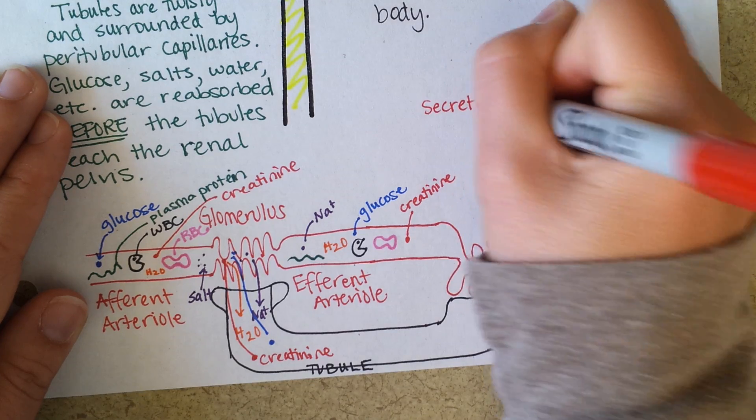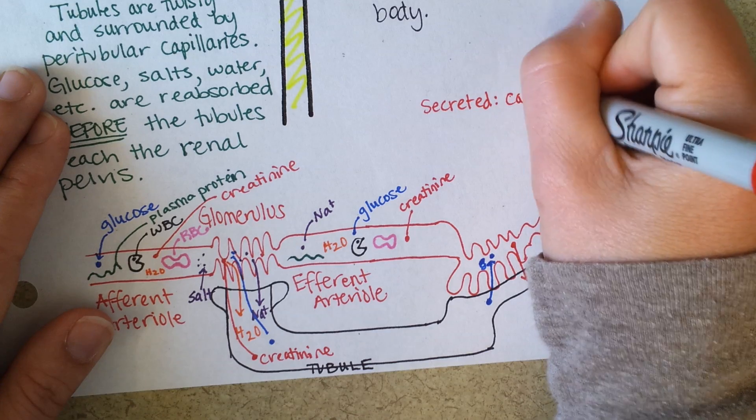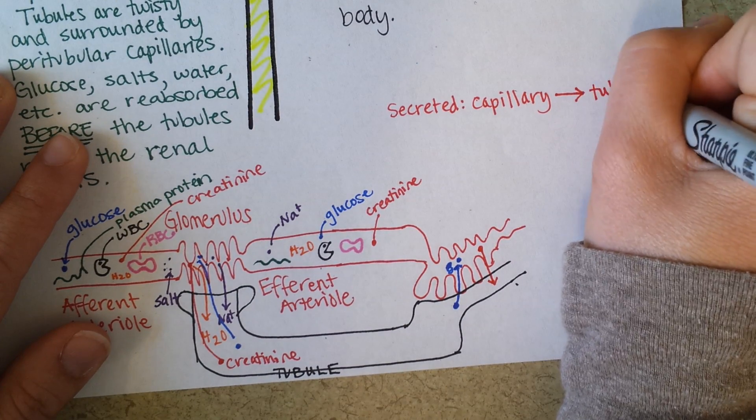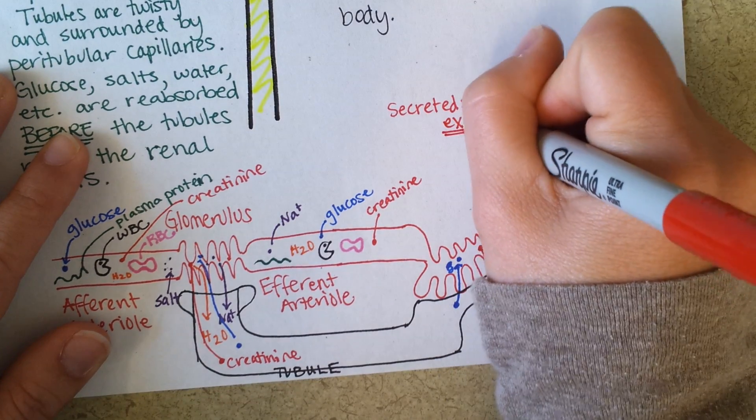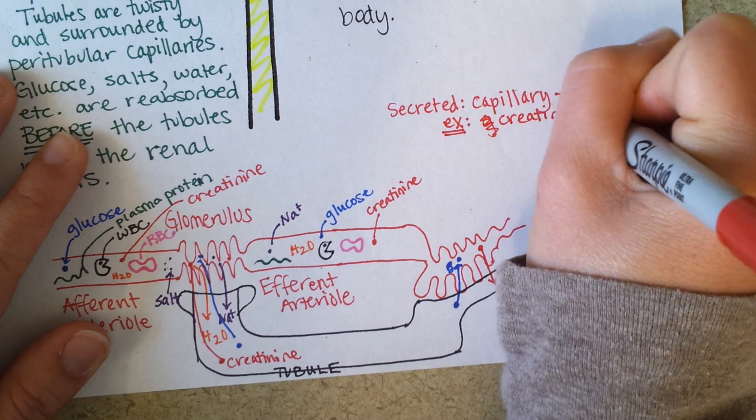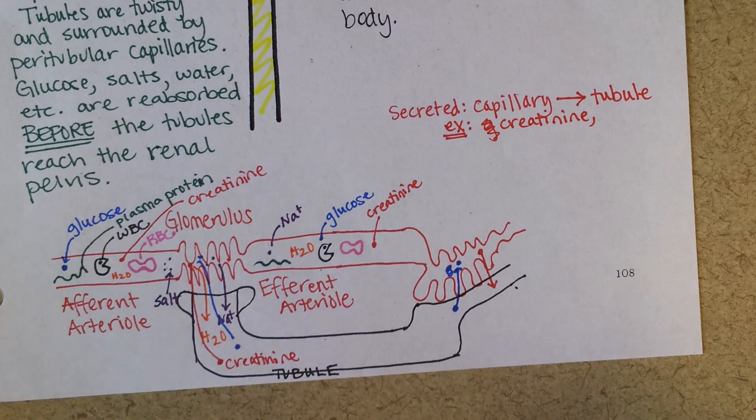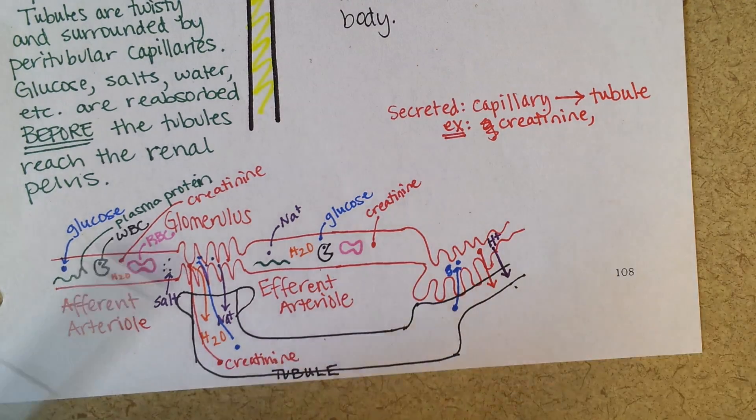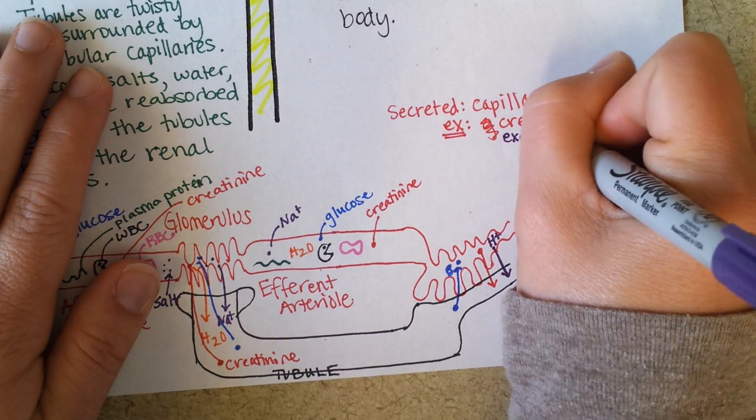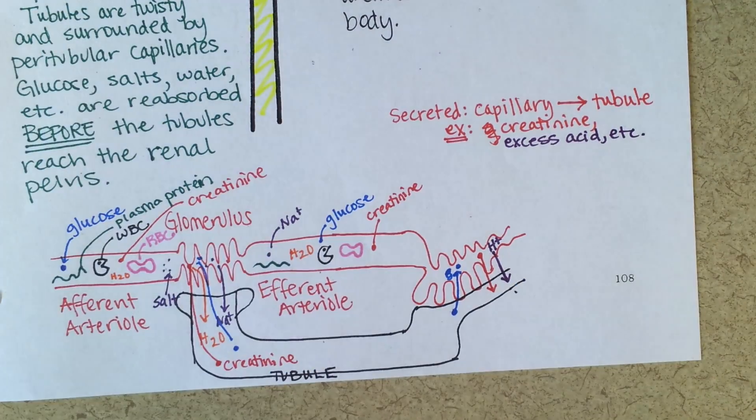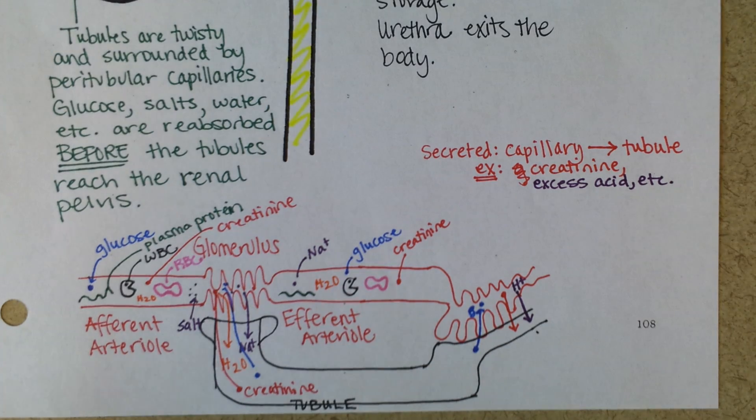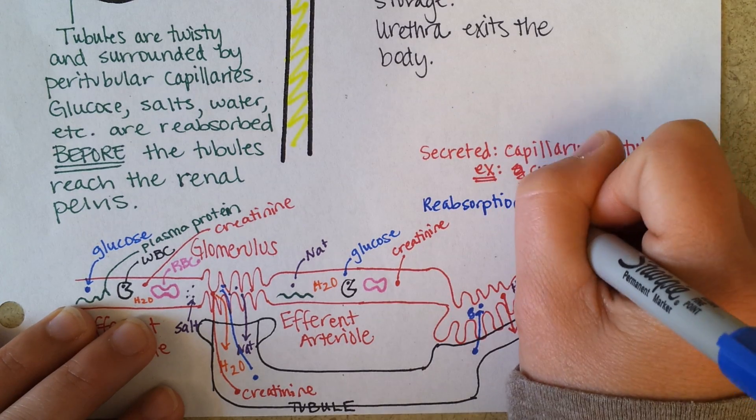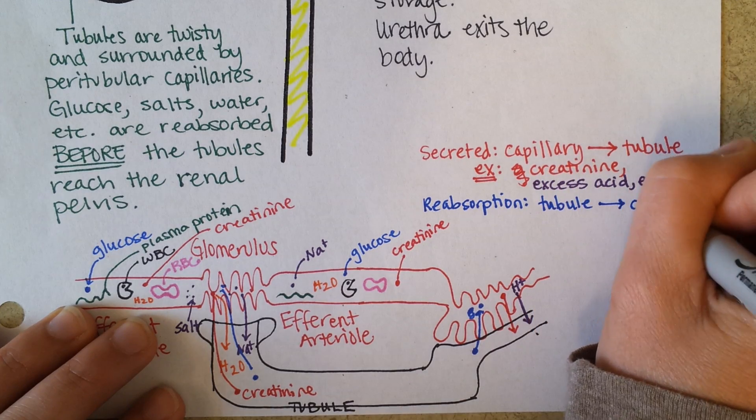So you have two words to learn. Secreted means to go from the capillary to the tubule. Example, creatinine. And maybe there was some excess acid, that would be another thing to put on here. Maybe some hydrogen. We'll come back to a lot of those things. So that's the process of secretion. And then there's a similar process called reabsorption, but it goes the other way.